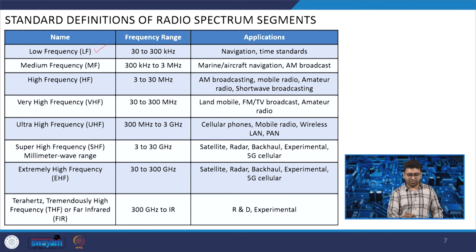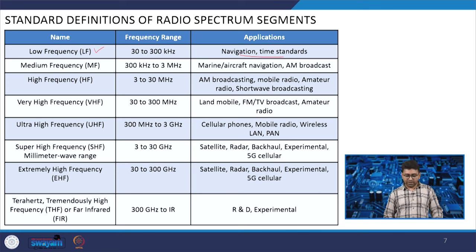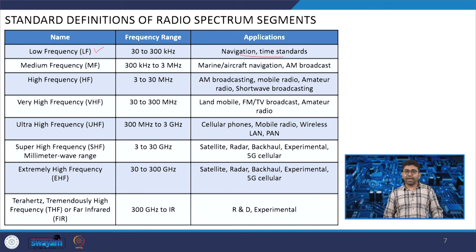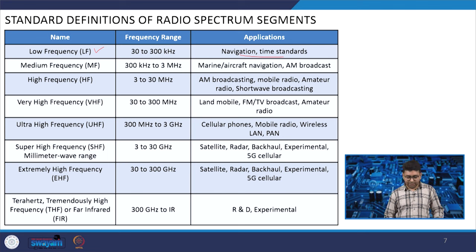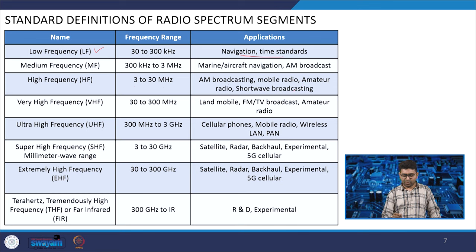Low frequency band, 30 to 300 kilohertz, is mostly used for navigation and time standards. Medium frequency (MF), 300 kilohertz to 3 megahertz, is used in marine and aircraft navigation or AM broadcasting — still used because at high frequency there is too much attenuation underwater. High frequency, 3 to 30 megahertz, is again used for AM broadcasting, amateur radio, and shortwave broadcasting. Very high frequency, 30 to 300 megahertz, is mostly used for FM and TV broadcast or land mobile.